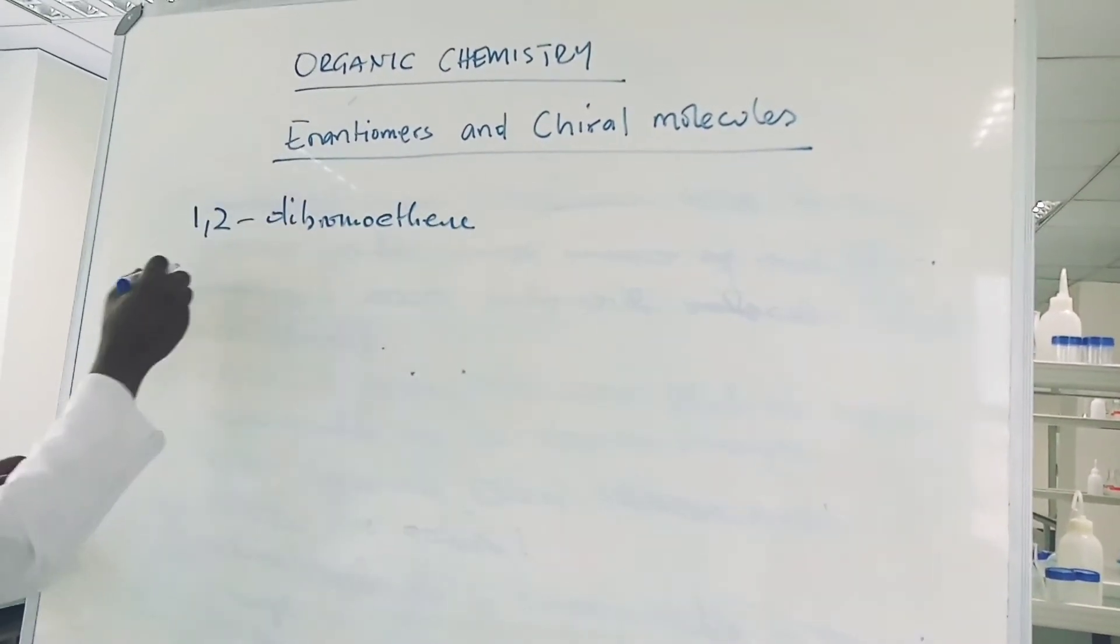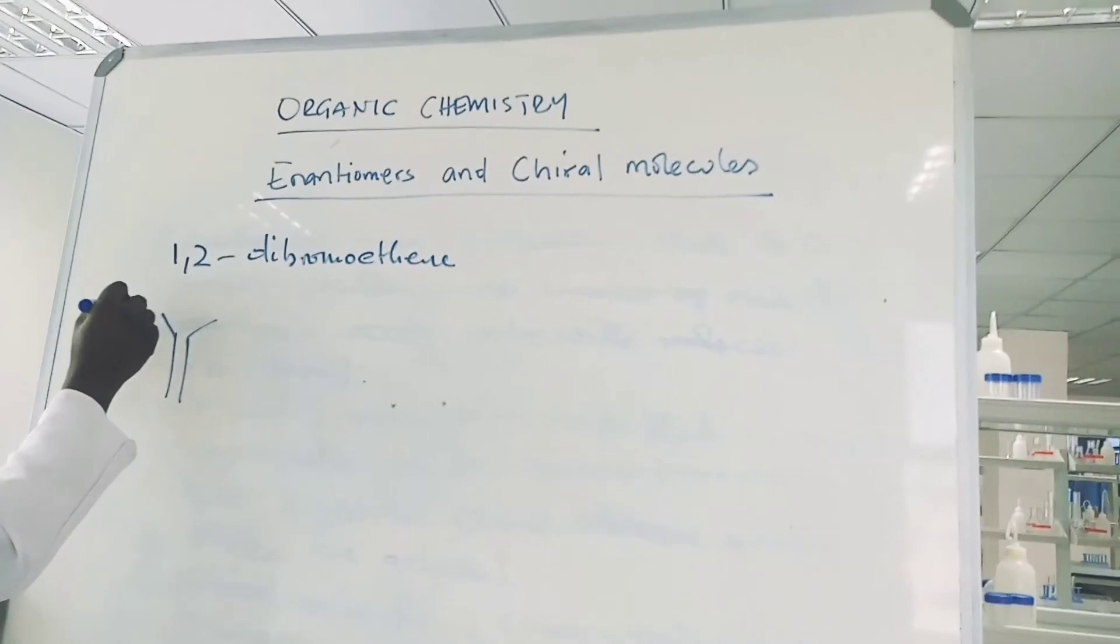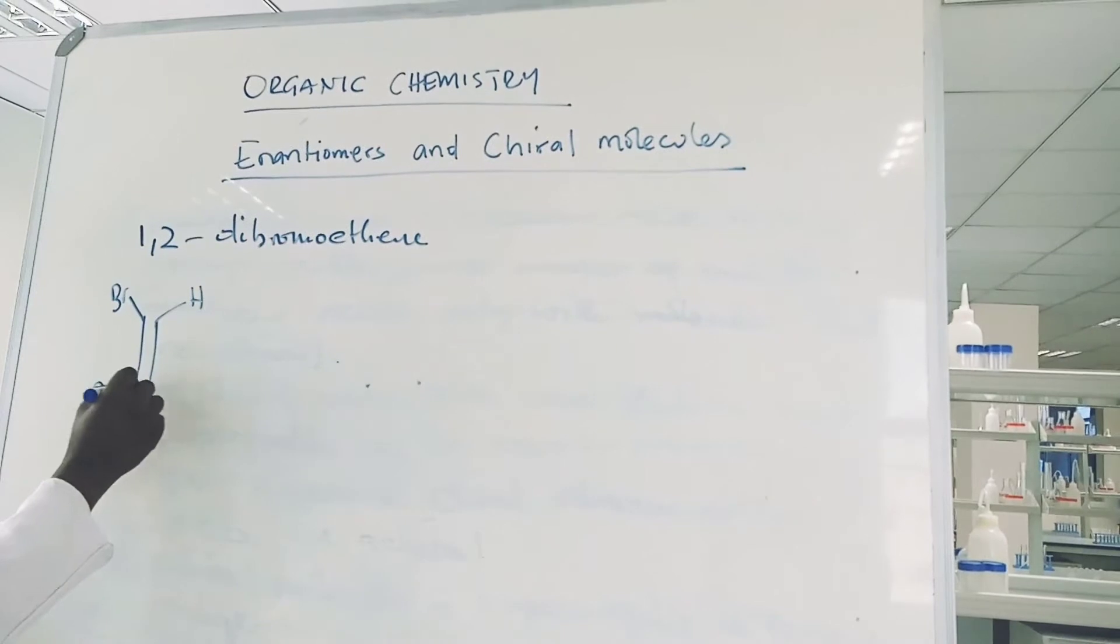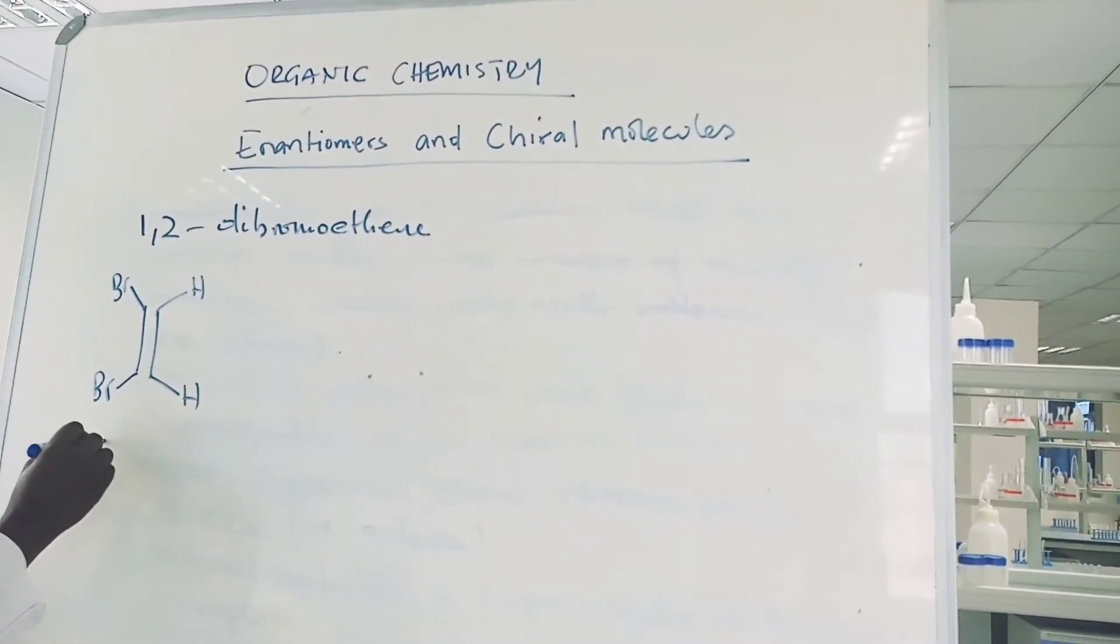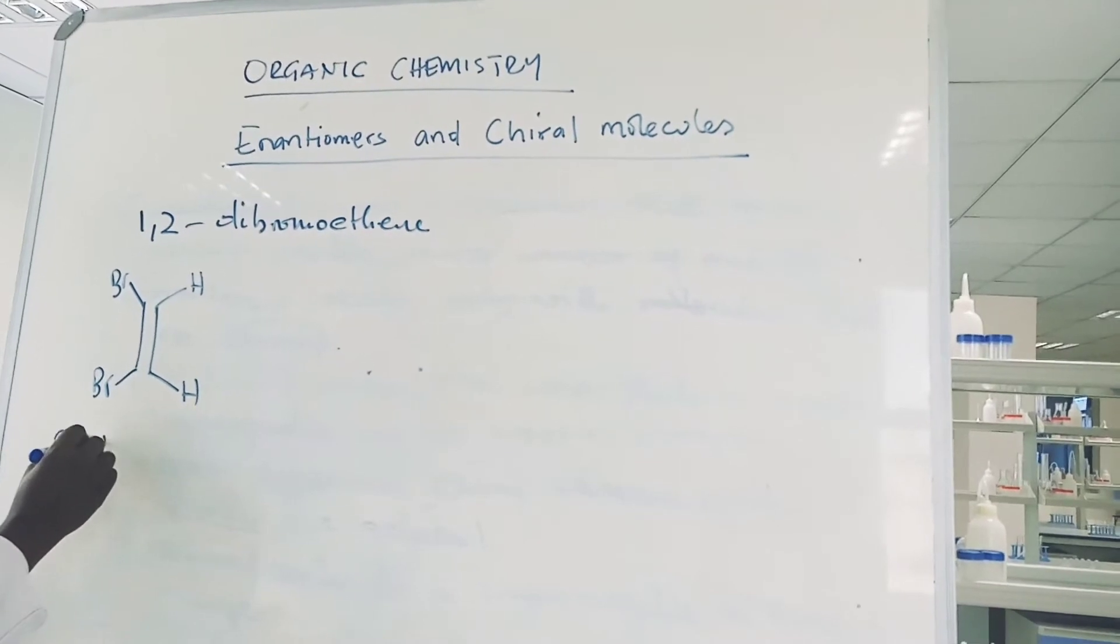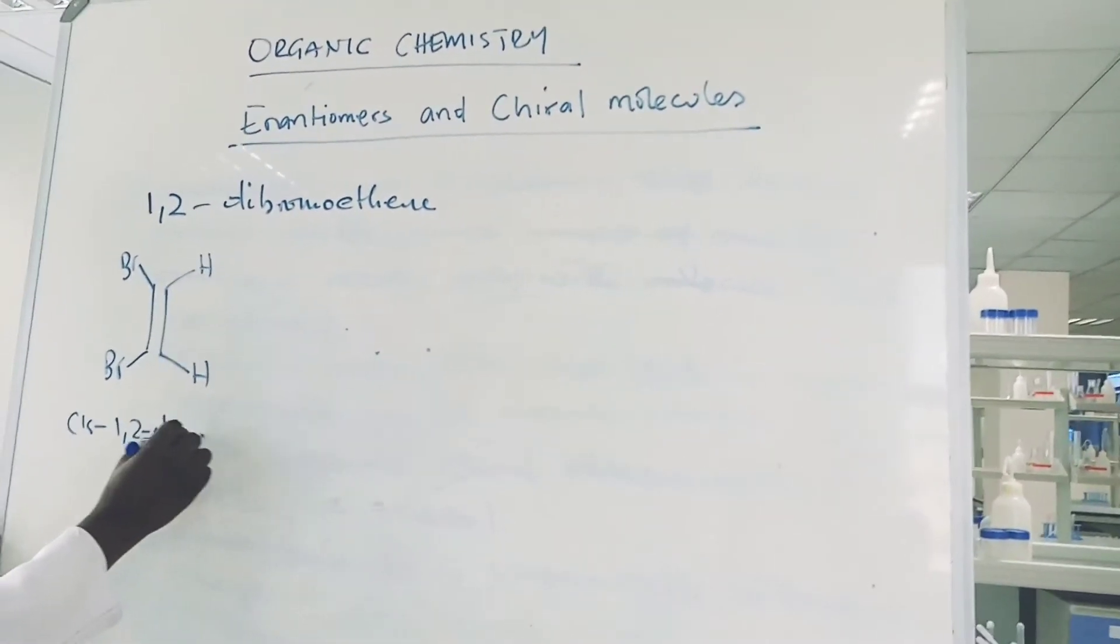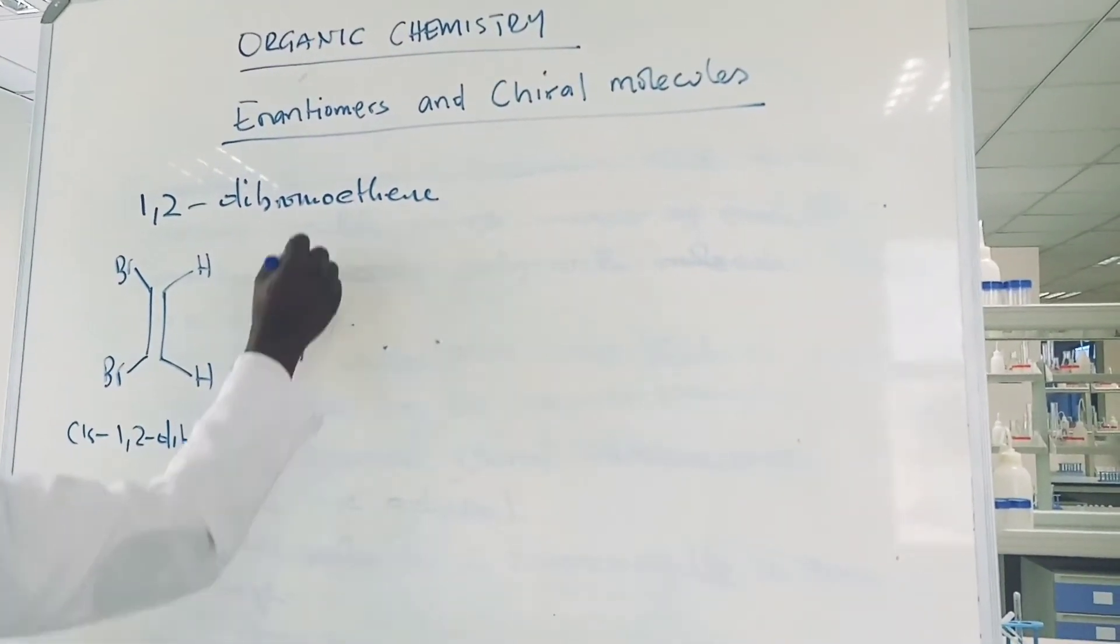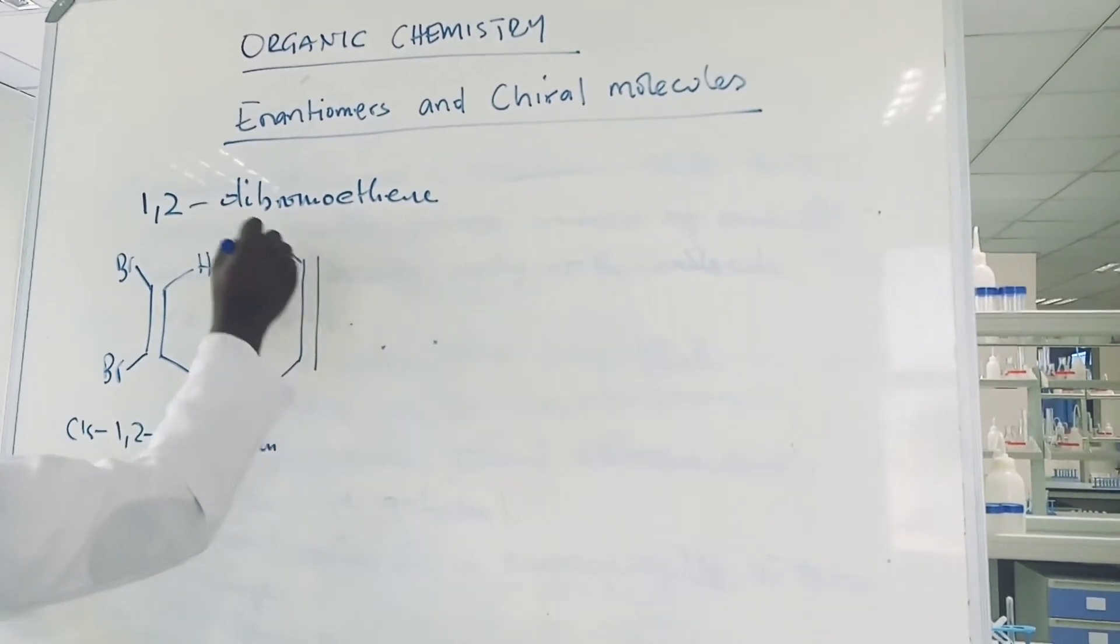We'll consider both cis and trans. So we have the trans, this is the cis, cis-1,2-dibromoethene. The mirror image for the cis isomer is this.